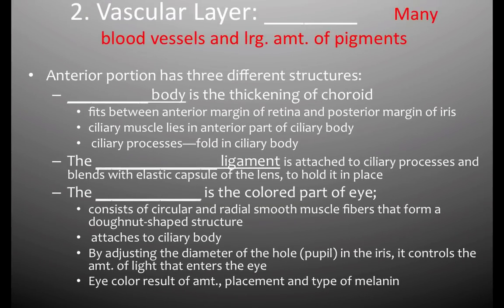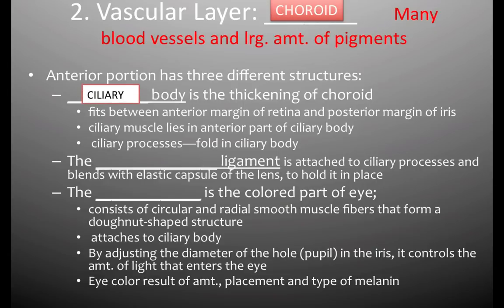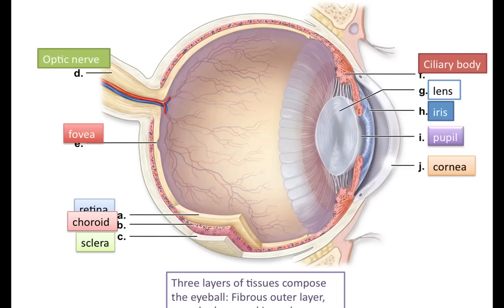The vascular layer is called the choroid, and that's why it was pink with all those red and blue dots — many blood vessels and a large amount of pigments exist here. The choroid has three different structures to note. First is the ciliary body, which is an extension of the choroid and merges together with it. The choroid is much thinner in the rear portions of the eye.